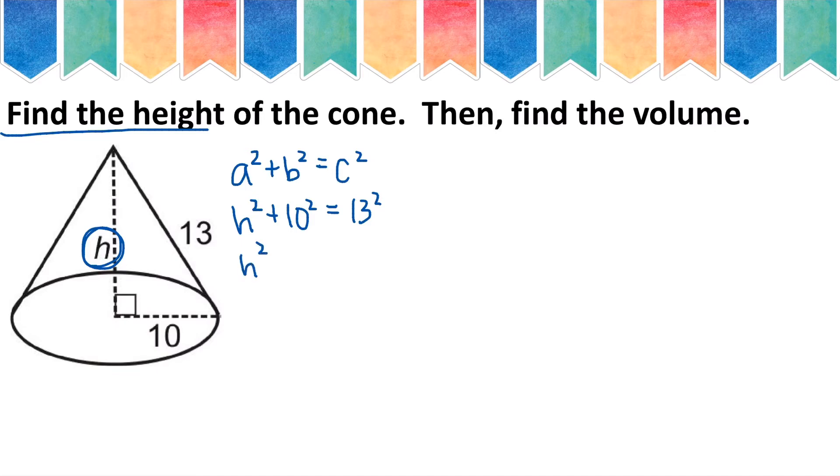So the h squared comes down, 10 squared is 100, and 13 squared is 169. I will subtract 100 from both sides. So h squared equals 69.